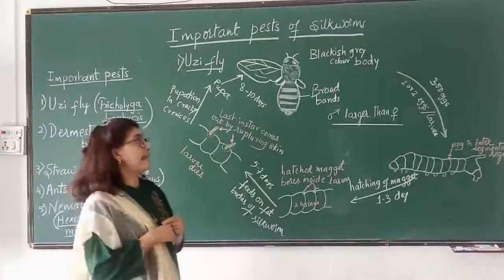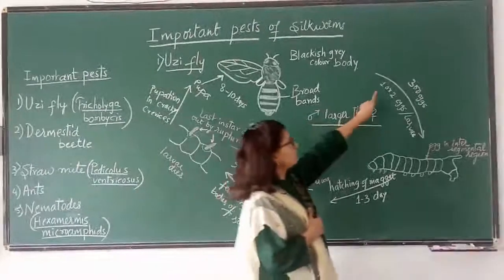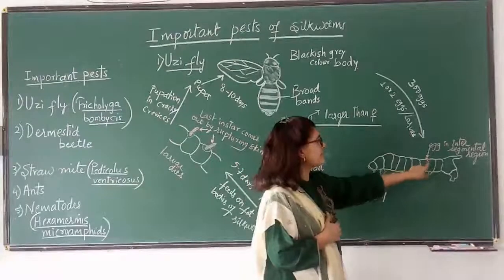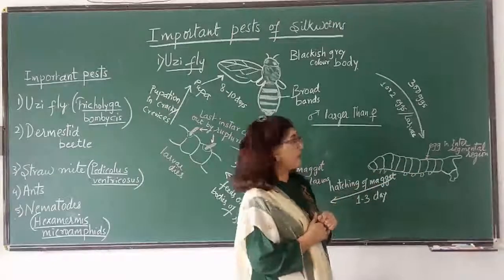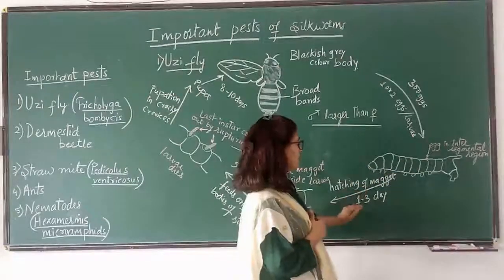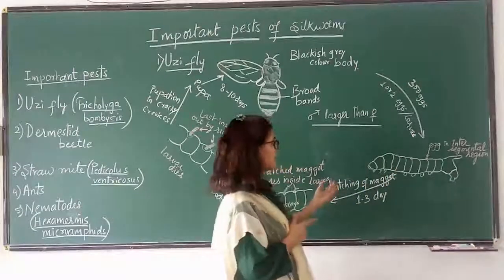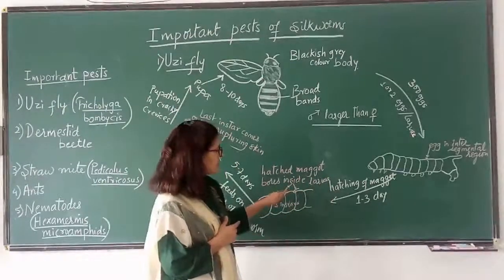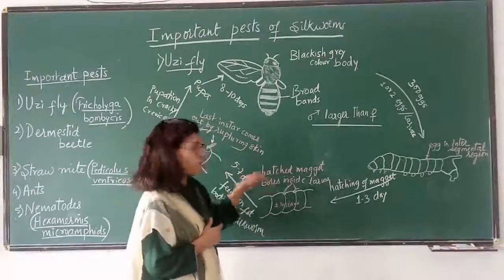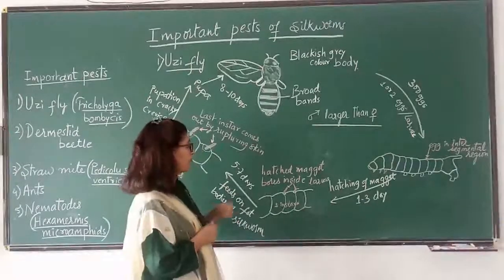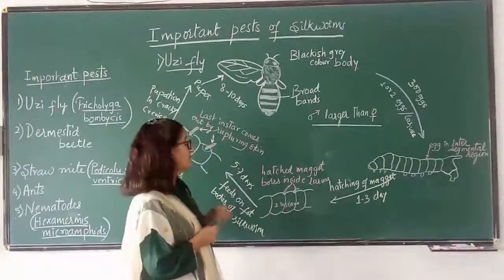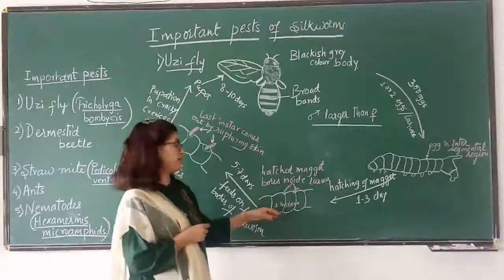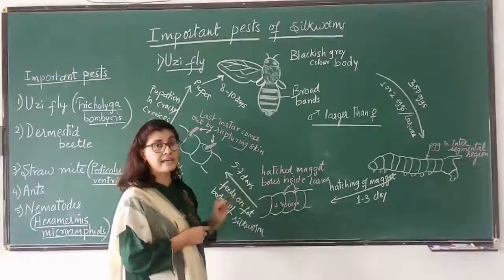The female, after mating, can lay up to 300 eggs, laying one or two eggs on each larva. The eggs are laid in the intersegmental region of the larval body. One to three days after egg laying, maggots of oozyfly hatch from the eggs. These maggots — the red coloured ones — make holes on the body of the silkworm larva. You can see black triangular marks where they enter inside the body, and they feed on the fat bodies of the silkworm larva.